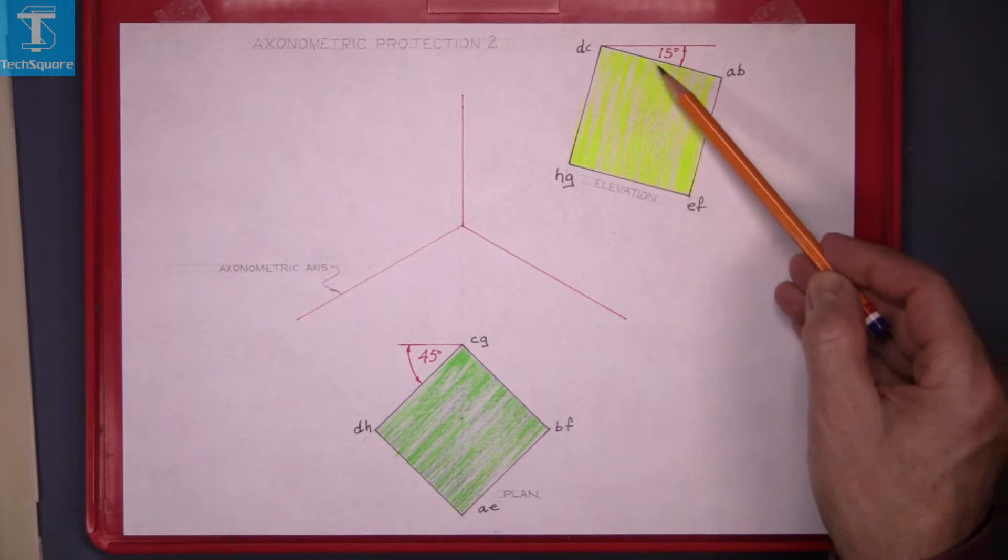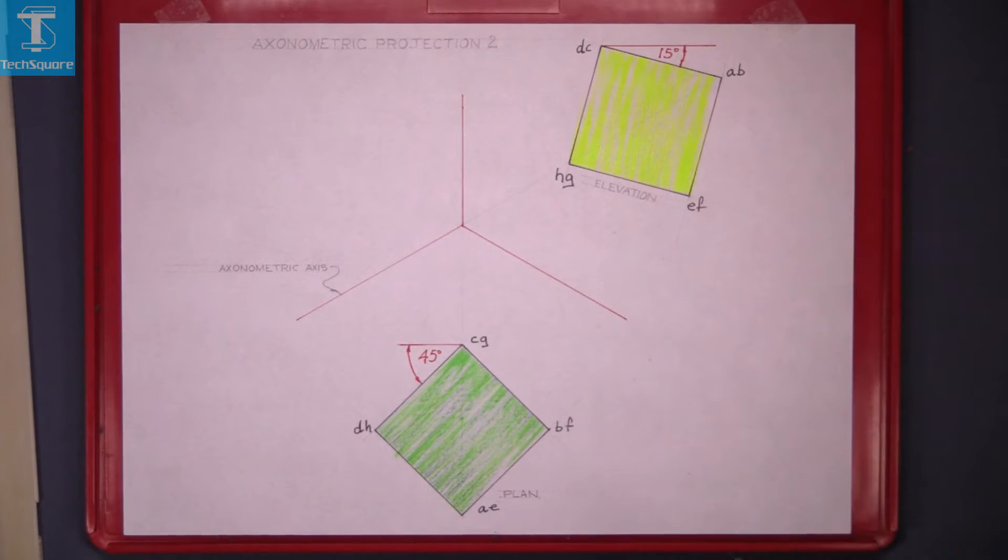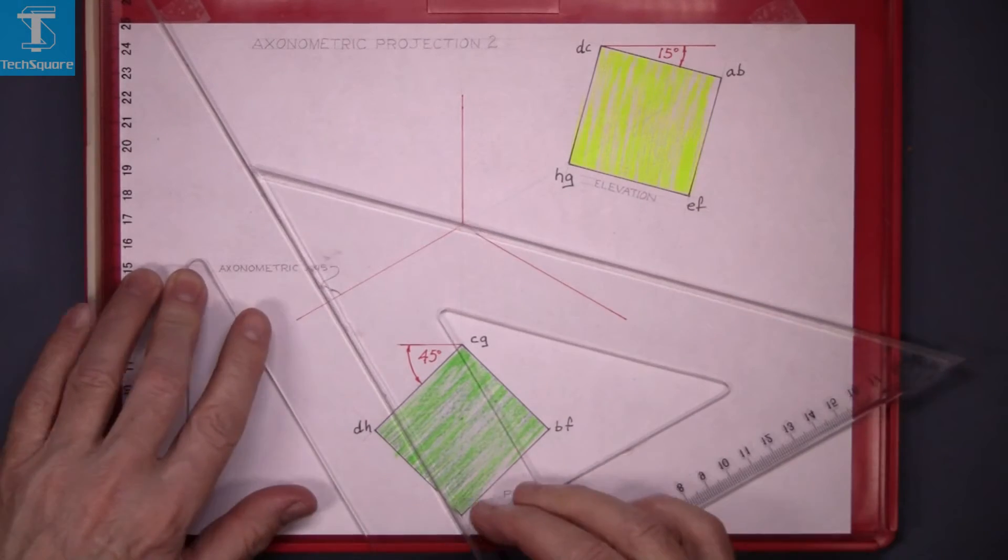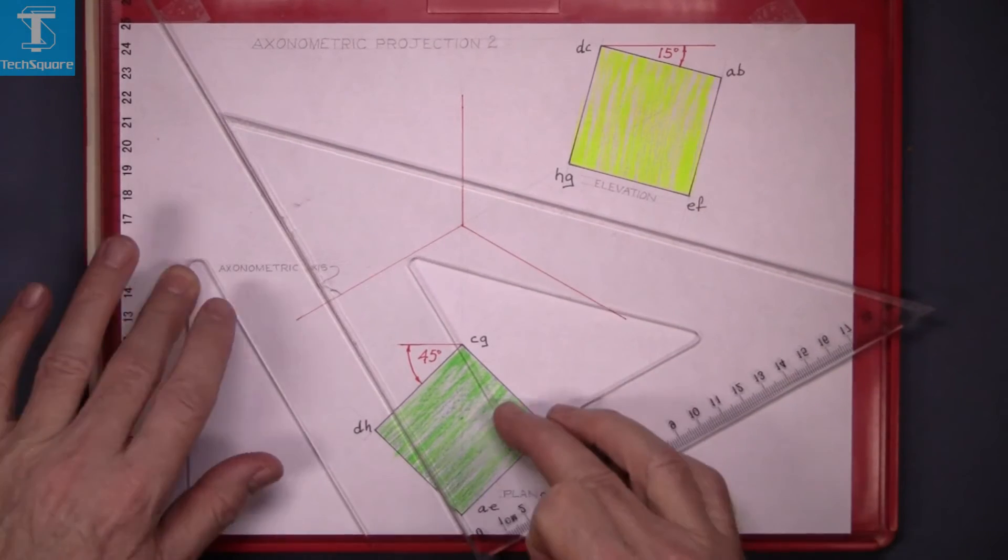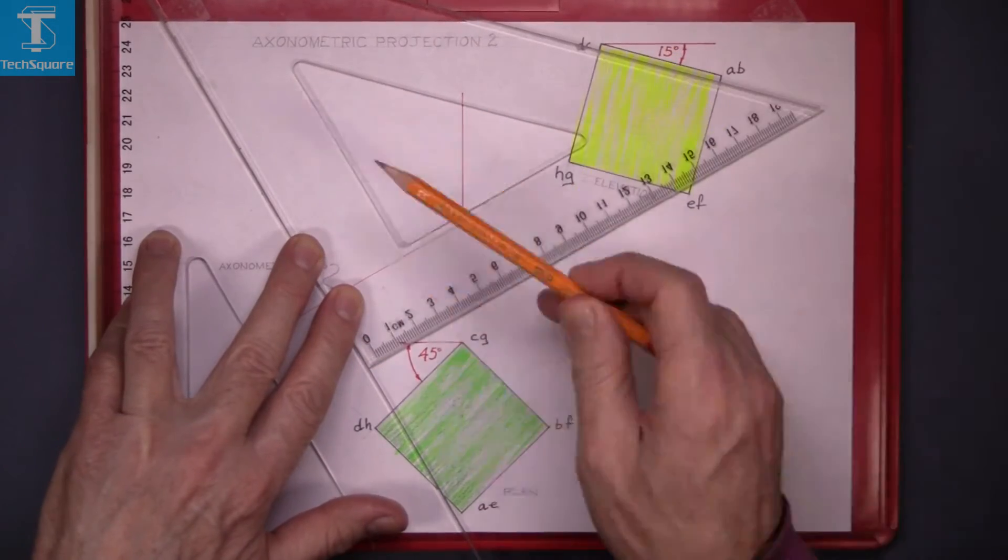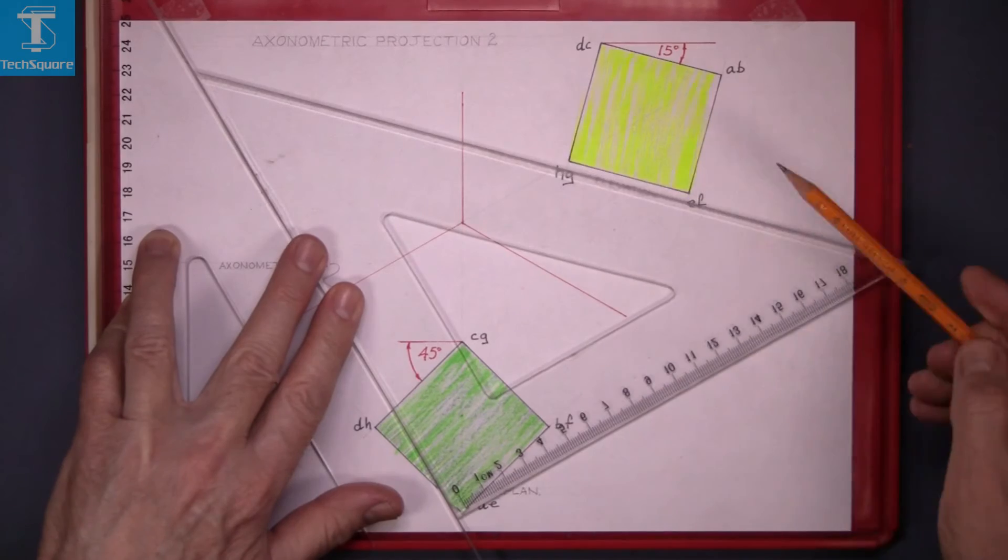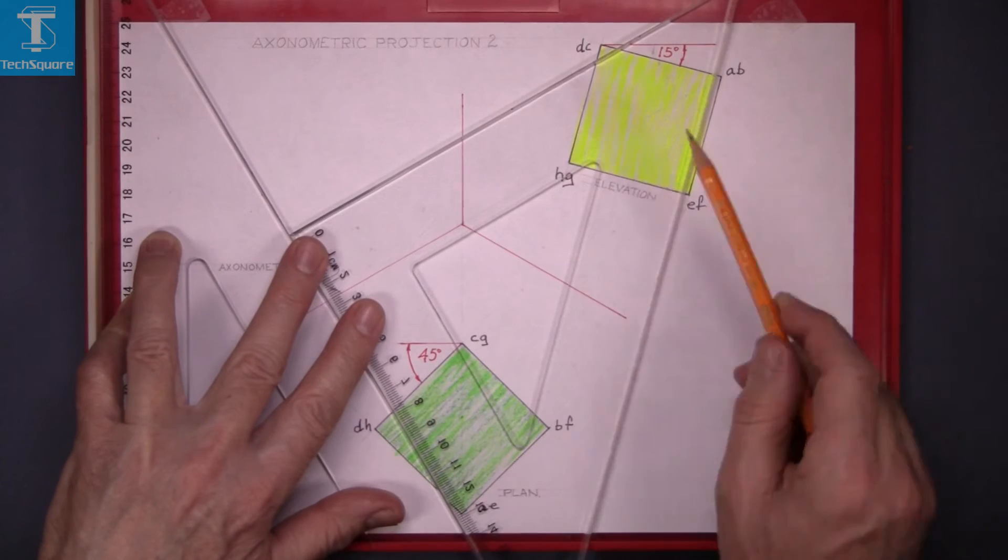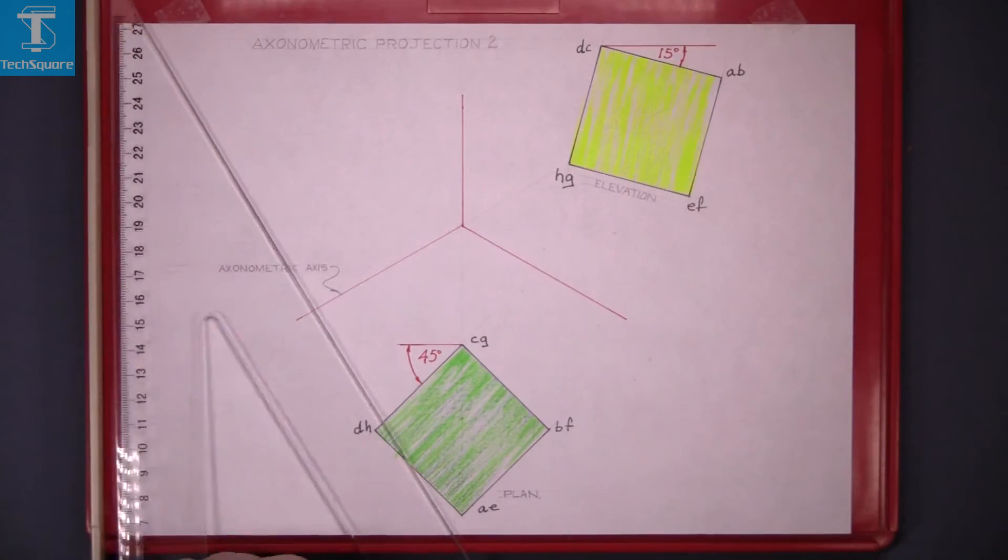To get this 15 degrees here you need to set up your 60 degree set square like this and your 45 degree set square on it and slide the 45 degree set square and that gets that 15 angle and the bottom line there. Turn it through 90 degrees to get the other two lines. And that's your elevation drawing.